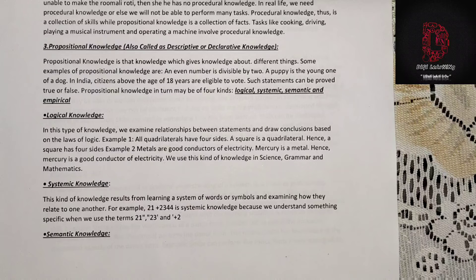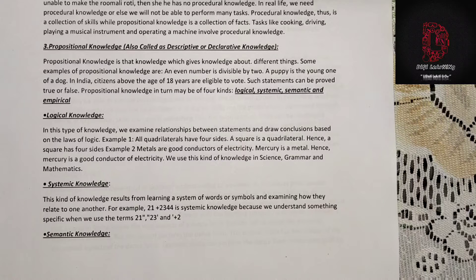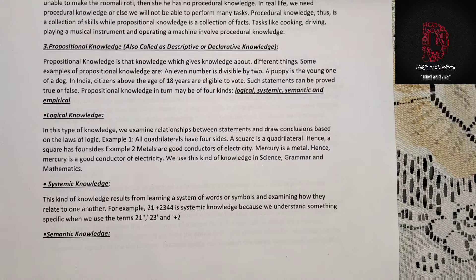First is logical knowledge. In this type of knowledge, we examine relationships between statements and draw conclusions based on the laws of logic. For example: all quadrilaterals have four sides; all squares are quadrilaterals; hence all squares have four sides. Another example: metals are good conductors of electricity; mercury is a metal; hence mercury is a good conductor of electricity. We use this kind of knowledge in science, grammar, and mathematics.